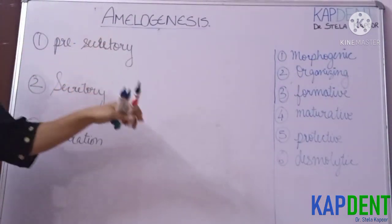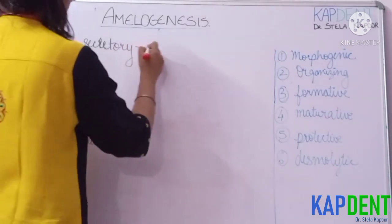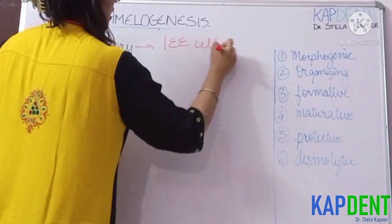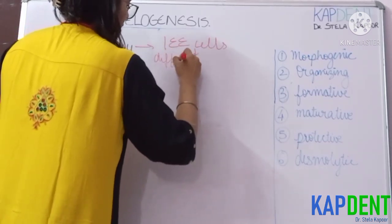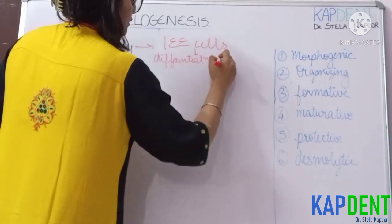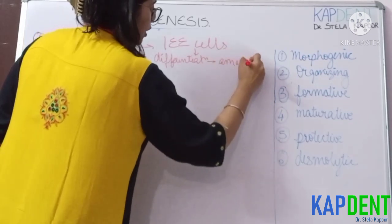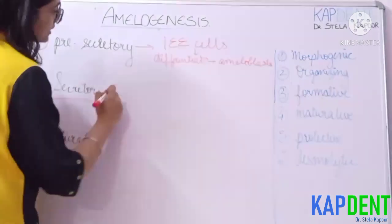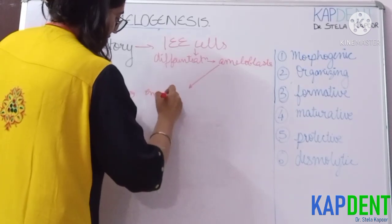The process of amelogenesis is further divided into: the pre-secretory phase, where your inner enamel epithelial cells are differentiating — in simpler terms, they are getting ready for the formation of enamel — differentiating to form ameloblasts. In the second or secretory stage, these ameloblasts are actually secreting your enamel matrix proteins.